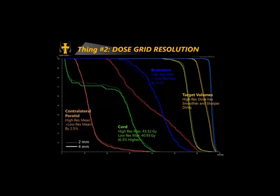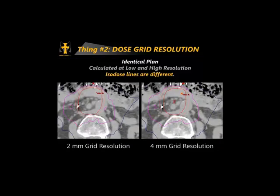It doesn't just affect DVHs — it affects isodose lines. With high resolution on the left versus 4mm on the right, just look at the difference in the magenta isodose lines. The high-resolution gives a much smoother isodose; we even start to pick up little peaks and valleys shown as islands that we barely capture at low resolution. If physicians are using isodose lines to make decisions and you're using 4mm grid resolution, you're giving them inaccurate isodose lines. Moving to 2mm, you start to get more confidence in the plan.